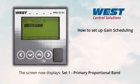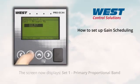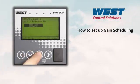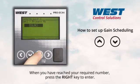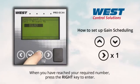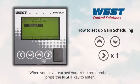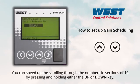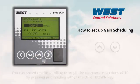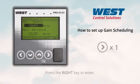The screen now displays set one primary proportional band. Use the up and down arrows to enter the primary proportional band value. When you have reached your required number, press the right key to enter. You can speed up scrolling through the numbers in sections of ten by pressing and holding either the up or down key, then press the right key to enter.